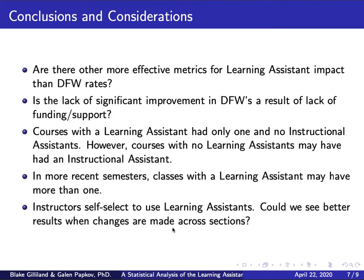There might be more effective metrics we could use to detect differences — DFW rates may not have been the right place to look. We could examine total grades, or whether passing students in LA courses earn more A's. Another possibility is that we should have seen significant results but didn't because of a lack of funding and support from the university — multiple instructors have expressed that frustration.